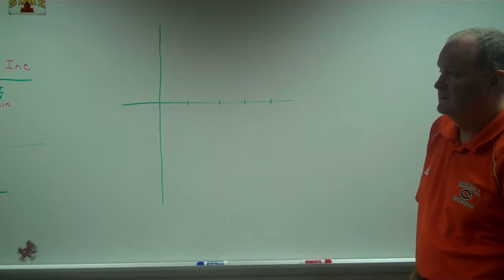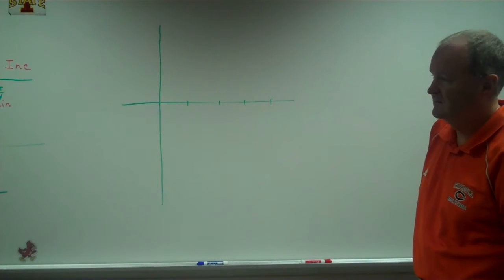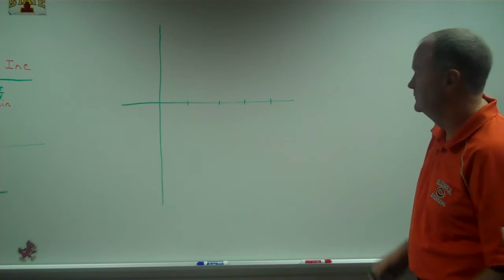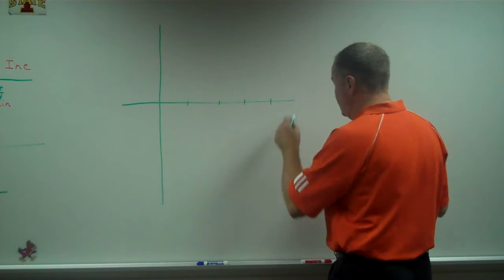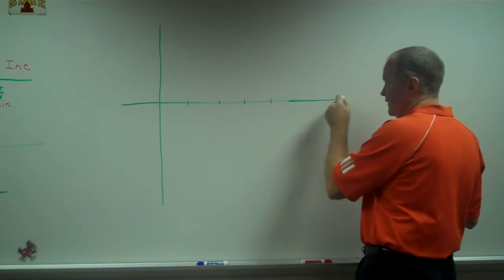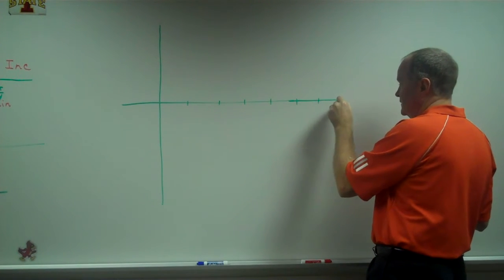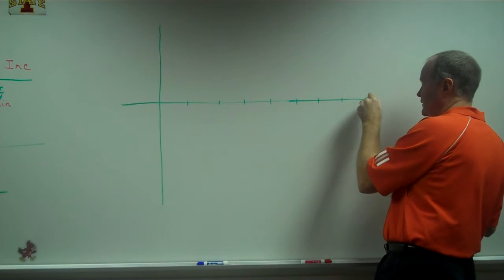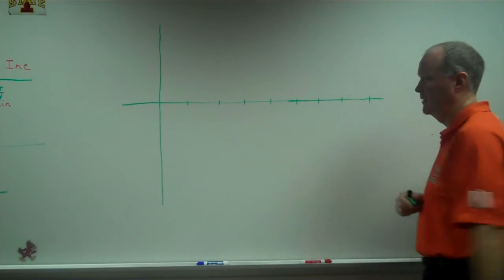What do we got first? X-intercepts? You know what, these are all like π over 4, aren't they? Mm-hmm. 5, 6, 7, 8. Let's do this all in π over 4's.